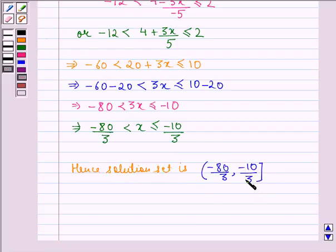It is closed from this side but open from this side, because here we see there is no sign of equality, but here we see that x is less than or equal to -10/3.